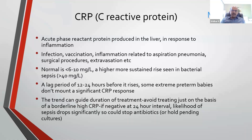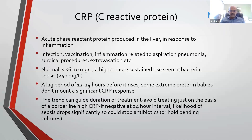The trend can guide the duration of treatment, and we should avoid impulsively treating just on the basis of a borderline high CRP. Once the CRP starts rising, it continues to go up for two to three days. So if the baby is clinically stable, don't escalate your antibiotics. We already have a huge problem with drug resistance, so we have a huge responsibility to avoid unnecessary escalation to antibiotics which are to be preserved.